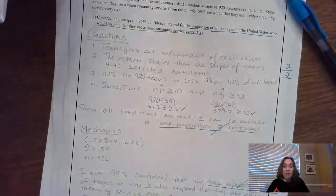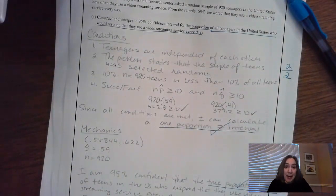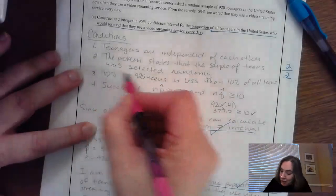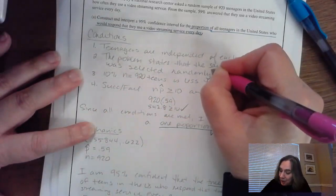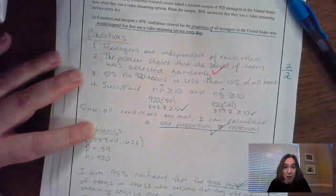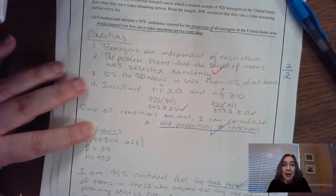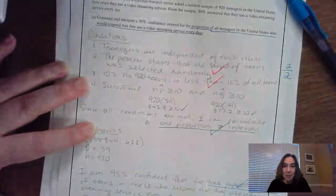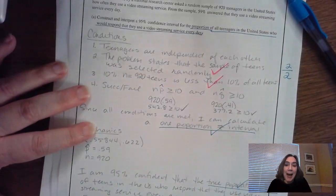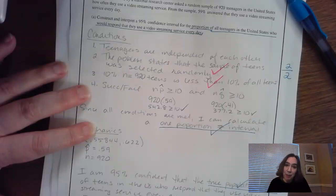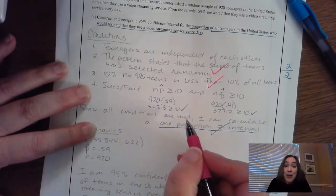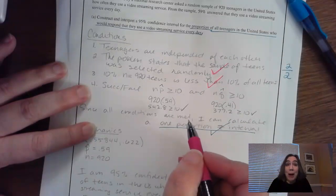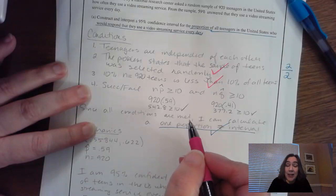So in the conditions they're looking for, first of all, is that they mentioned that in the conditions the problem stated that this was a random sample. If you said there was a random sample done, give them a check mark. Give yourself a check mark. You also have to make sure you indicated that 920 teens is less than 10% of all teens. Second check mark. You also have to have checked NP hat and NQ hat. Both have to be greater than or equal to 10. Remember, we don't know what P is. Remember, where's the P? We don't know the true population proportion of teens that stream video. We don't know.